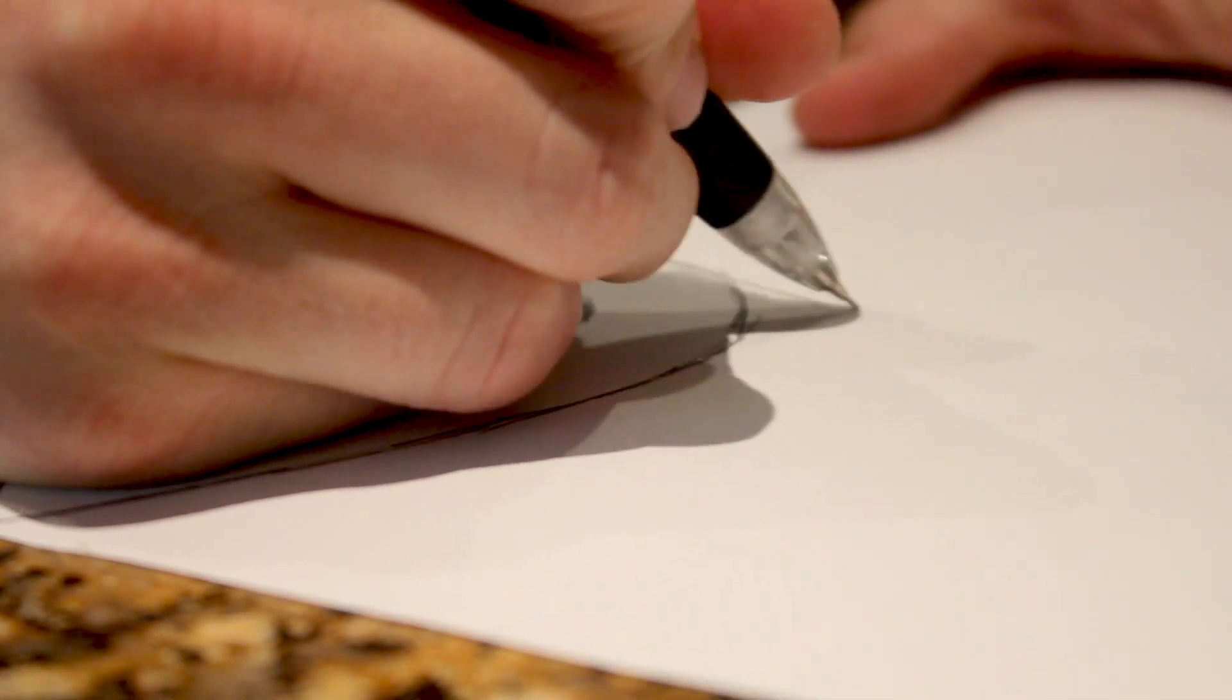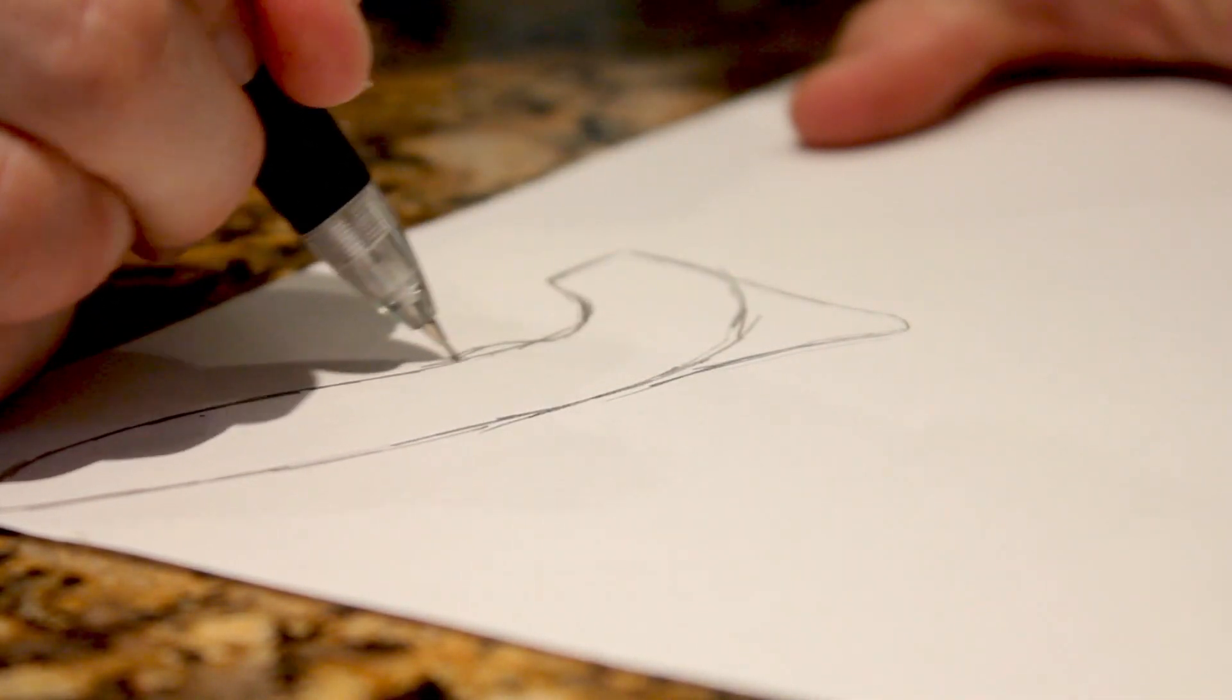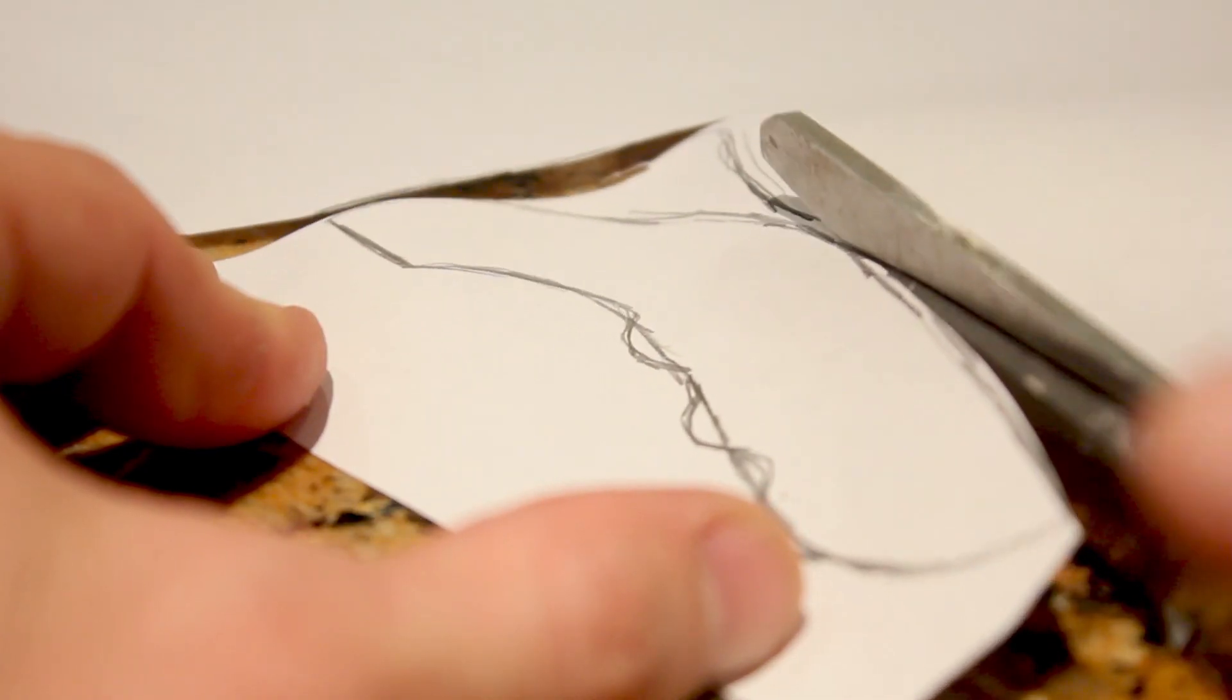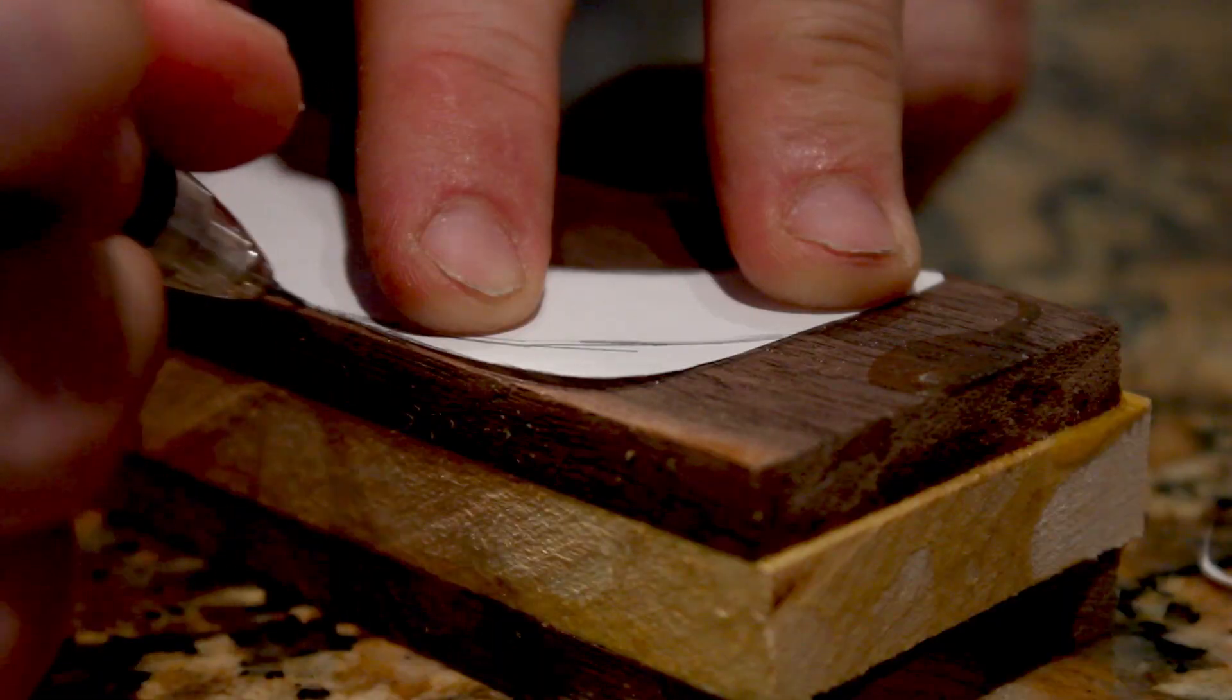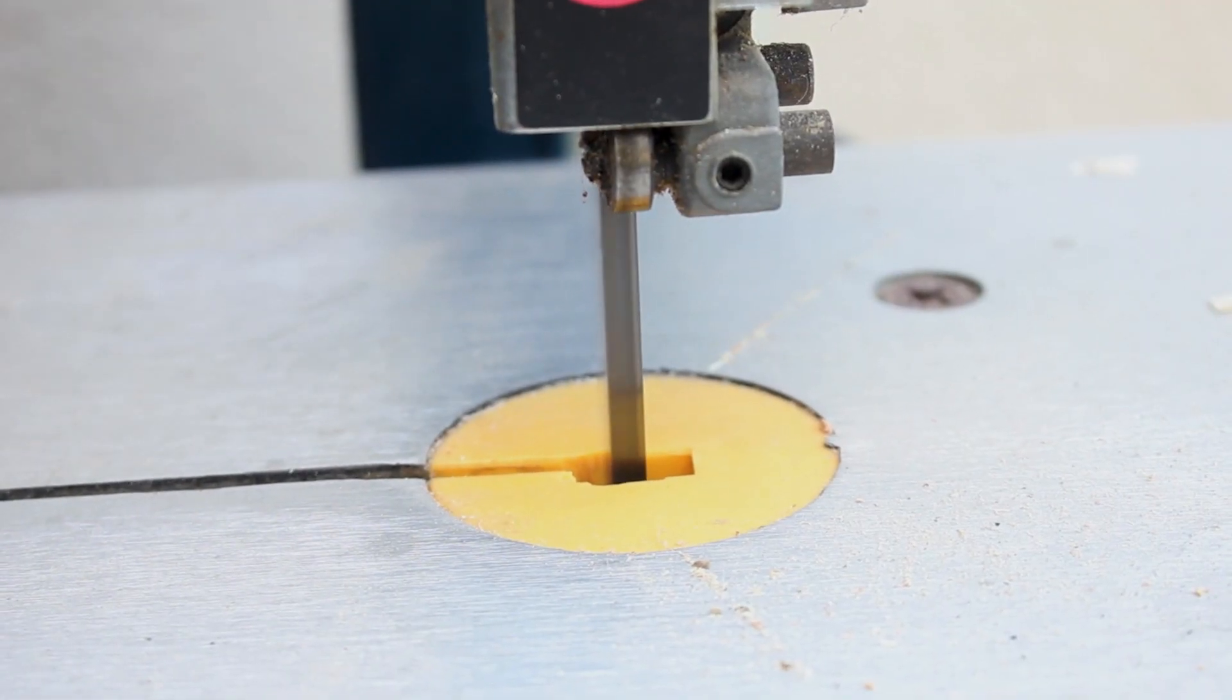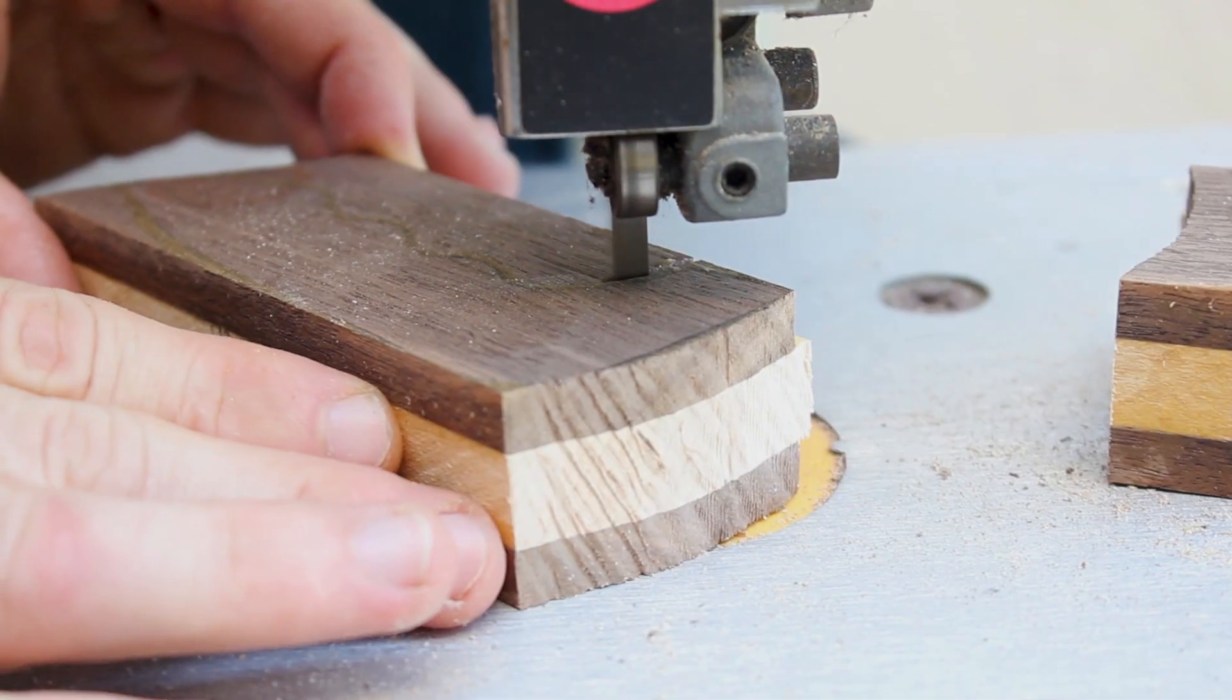I took the previous drawing I had and then revised it and made an altered version that I thought might look cool. Then I cut out that design, transferred it to the blank, and then roughly cut that out on my bandsaw, which has a huge amount of blade drift that I always need to account for and is kind of annoying.